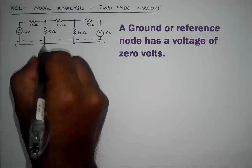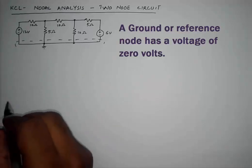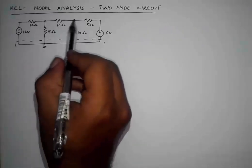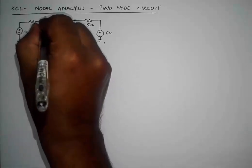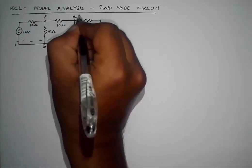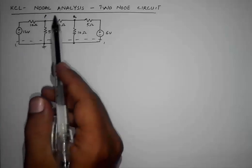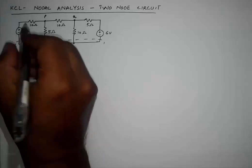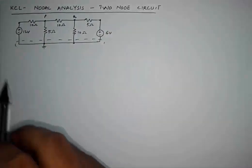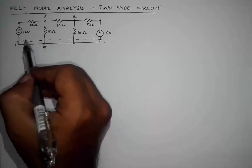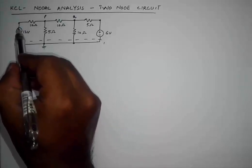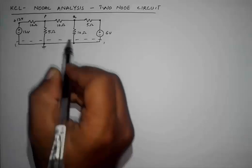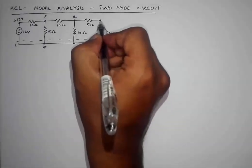The next step is to name our nodes. There are two nodes other than the reference node, so I am going to name these nodes P and Q. These nodes will also represent the voltage at those nodes. We will now identify any voltages we can find directly: there is 0V at the reference, and the 12-volt source gives us 0 + 12 = 12V, and the 6-volt source gives us 0 + 6 = 6V.